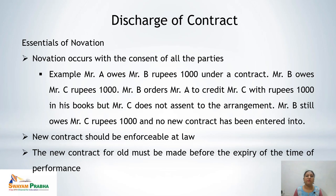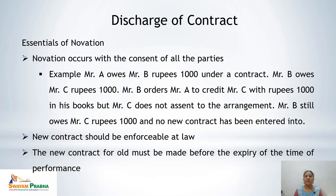The essentials of novation are: first, novation occurs with the consent of all the parties. For example, A owes B rupees 1,000. B owes C rupees 1,000. B orders A to credit C with rupees 1,000, but C doesn't assent to the arrangement. There was no consent of C, so B still owes C rupees 1,000 and no new contract has been entered into. If there is no consent of any party involved, novation is not possible.